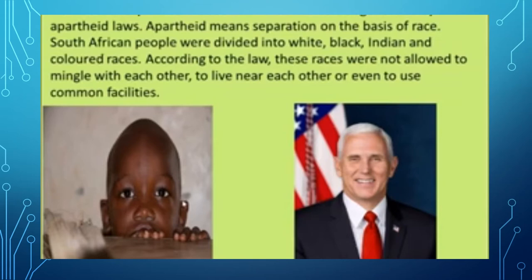Apartheid means separation on the basis of race. South African people were divided into white, black, Indian, and colored races. According to the law, these races were not allowed to mingle with each other, to live near each other, or even to use common facilities.